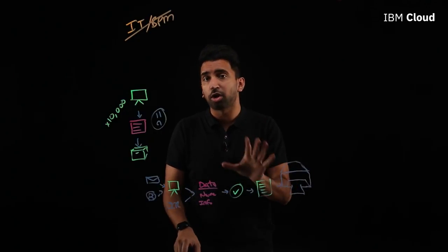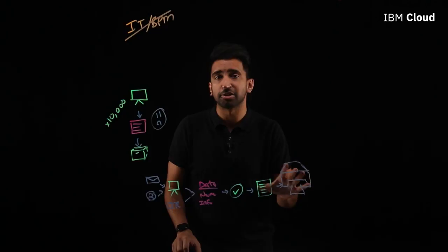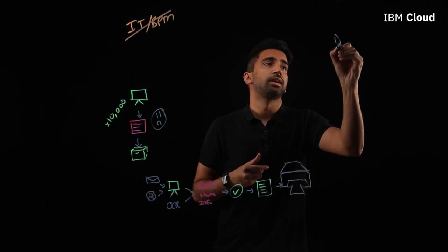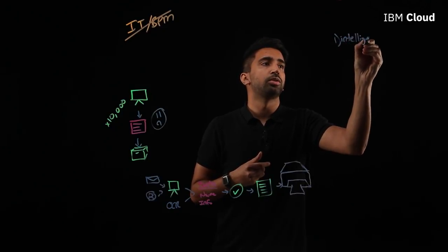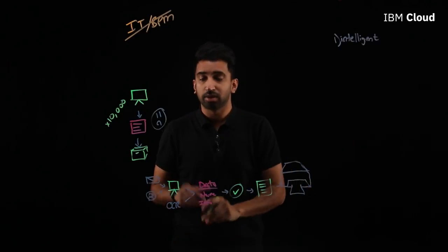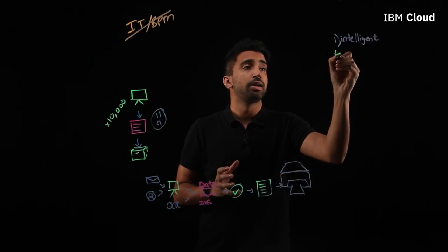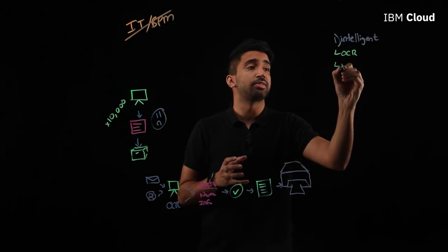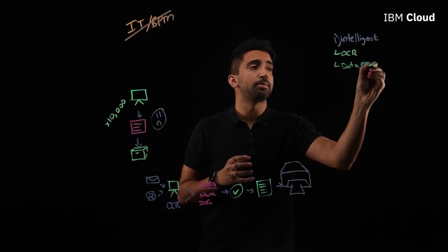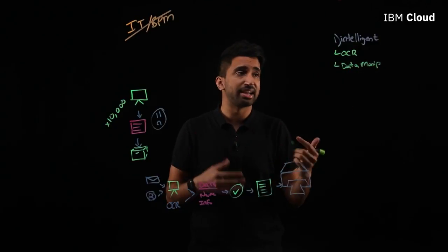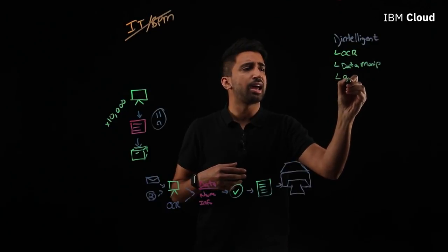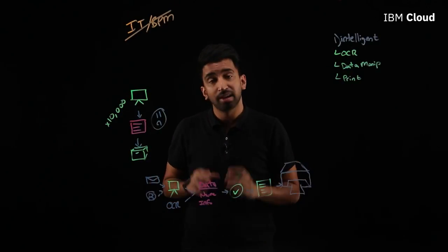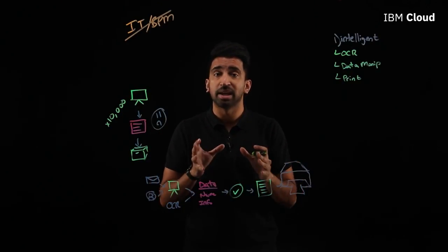When choosing an RPA solution, there are four major things you need to be looking for. The first is that your RPA tool should be intelligent. In this particular flow, Pete used a lot of capabilities — OCR, optical character recognition, different data manipulation techniques to extract and input data, validate it, and even a function to print something out, creating a physical piece of paper from a software-based automation. That's just scratching the tip of what RPA can do today.